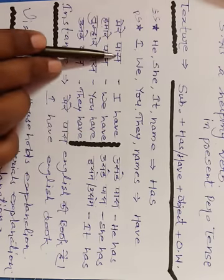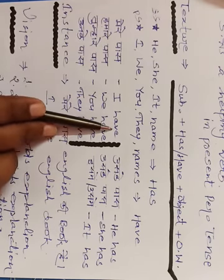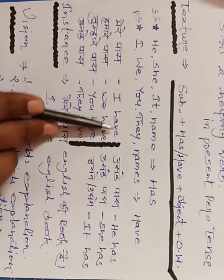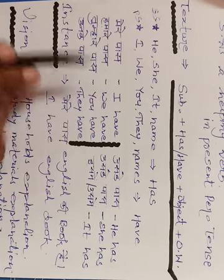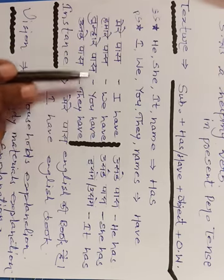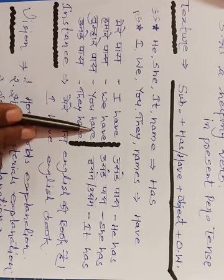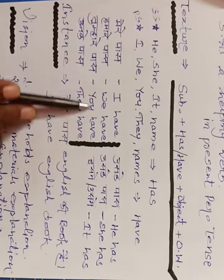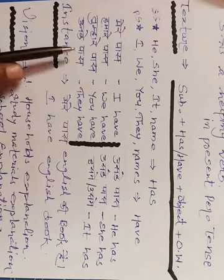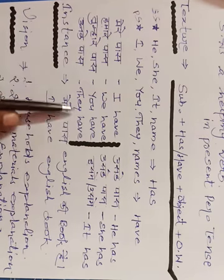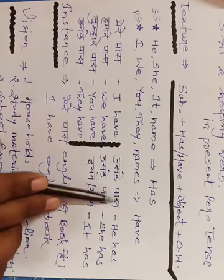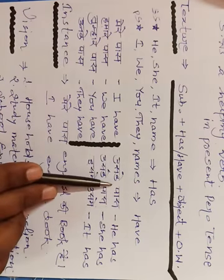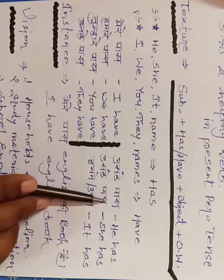Reason kya hota hai? Reason aapko ek fluency deta hai, ek sequence deta hai, ek consistency deta hai — aapke mind mein thoughts ko aane ke liye. Jab aapke mind mein bahut saare thoughts ek sequence mein, ek simple aur single use ke sense mein lagataar aate hain, toh aap use bahut teji se convert kar sakte hain. Even aap chahein toh apne thoughts ko directly English mein express kar sakte hain. Jab aap direct English mein socheinge, toh direct English mein bolenge.